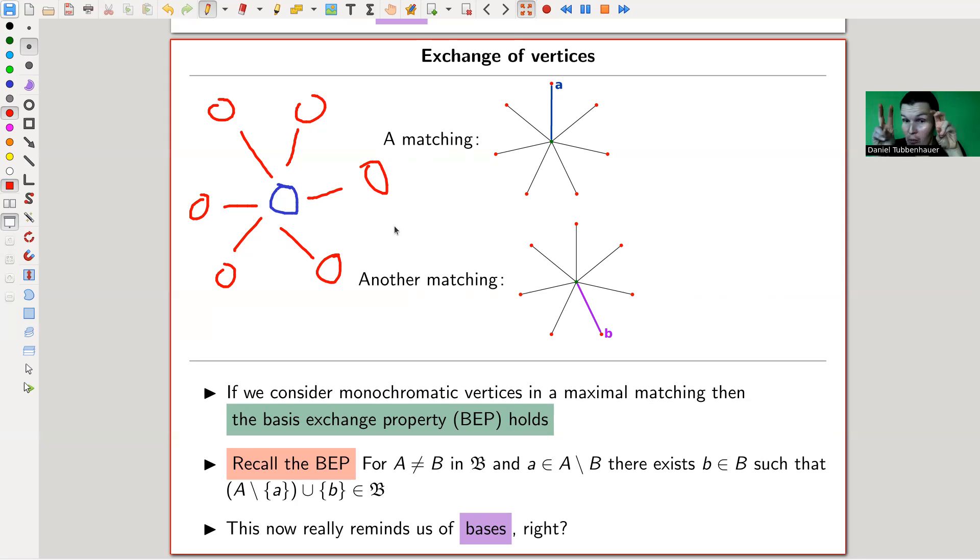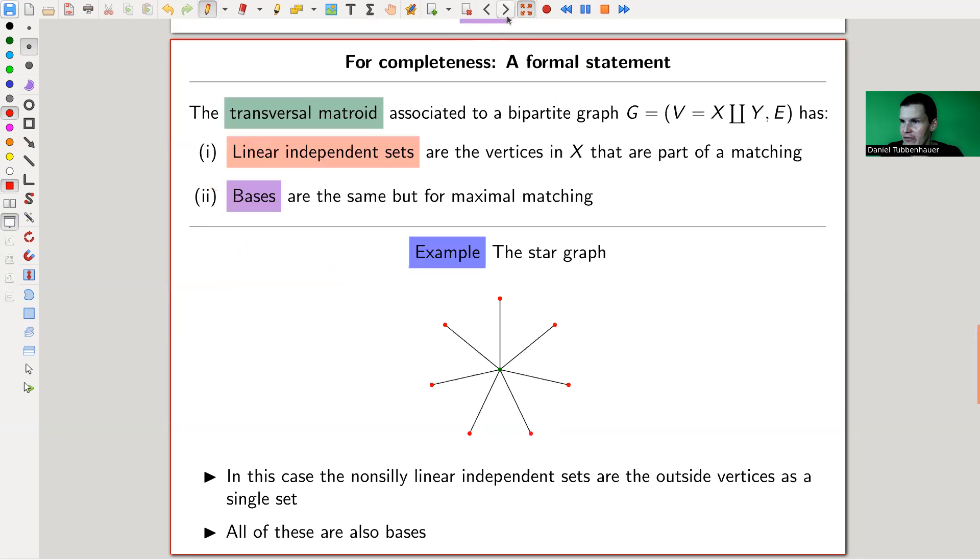But now we can exchange vertices in my bases in a very simple way, just pick another edge. And that's really the basis exchange property in this example of a very easy bipartite graph. So not just we observe that all bases or wannabe bases are of the same size. No, we also observe that our basis exchange property holds. Well, let's say in this easy example, but you can easily check that for all bipartite graphs. So again, something you would observe eventually if you're studying bipartite graphs. So we should just be able to define a matroid based on matchings. And there you go. That's the transversal matroid.